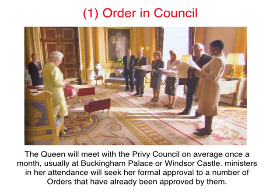This picture shows the Queen and Privy Council meeting, on average once a month, usually at Buckingham Palace or Windsor Castle. The Ministers in attendance will seek her formal approval to a number of orders that they have already approved beforehand. There is nothing secret about the Privy Council — all orders are in the public domain with the date and place it was made and who was in attendance. The Queen also approves proclamations, which are formal notices covering the dissolution of Parliament, coinage and the dates of bank holidays.